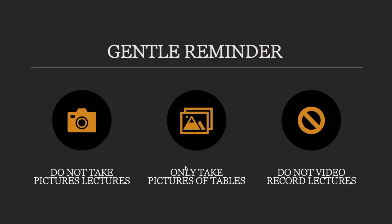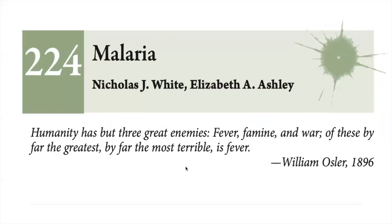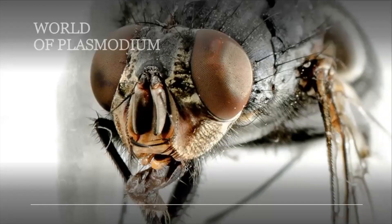Just a gentle reminder of our house rules. These are the official references I'll be using for this coaching module: Jowett's Medical Microbiology, the most recent edition of Harrison's Principles of Internal Medicine, and the most recent edition of Robbins Cotran Pathologic Basis of Disease. We will be summarizing the key features of Chapter 224, Malaria, found in Harrison's. And we're going to enter, for the next 15 to 20 minutes, the world of Plasmodium.